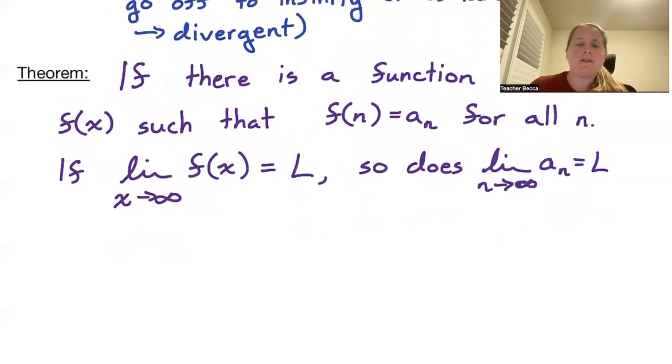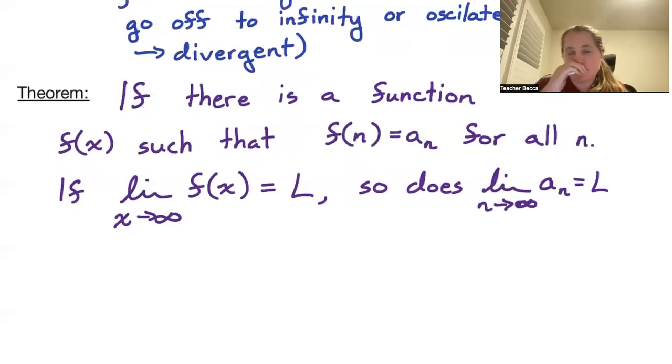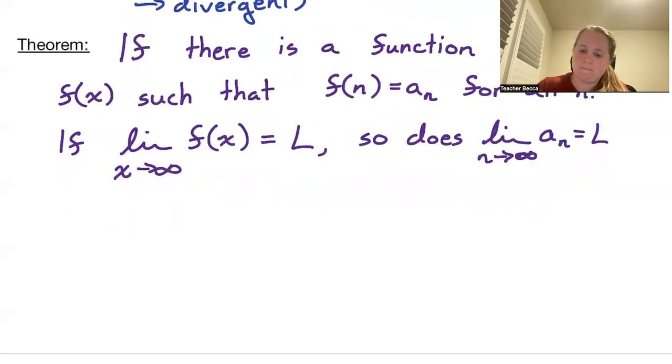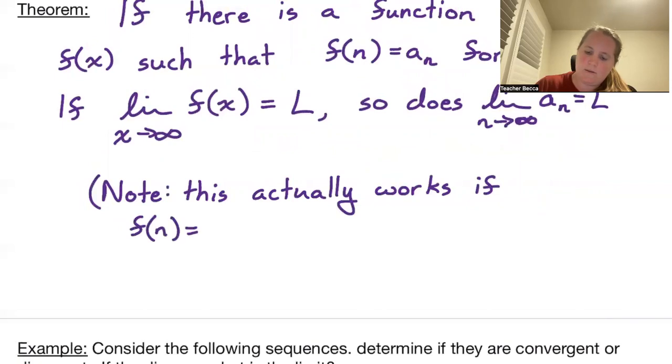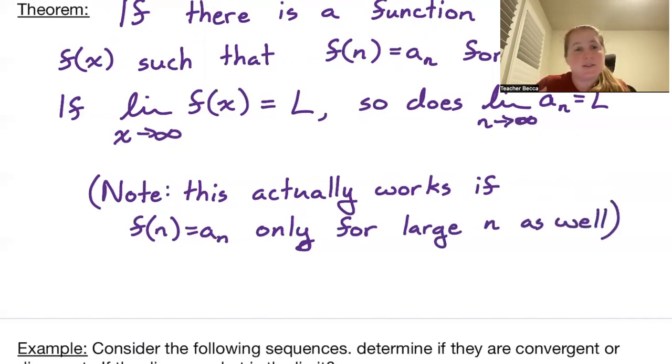Just a quick comment here. We actually don't need this to be true for all n. We need the function to match a_n for large n. Just a quick note: if f(n) equals a_n only for large n as well. So since limits at infinity only pay attention to really what's happening as we go to infinity, it doesn't matter if f(x) doesn't match a_n for small values, as long as they eventually match.